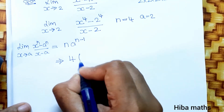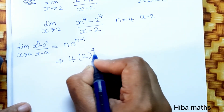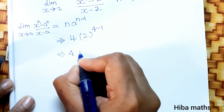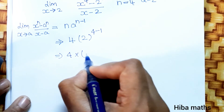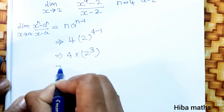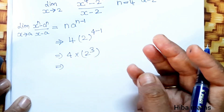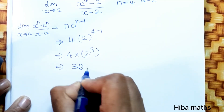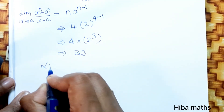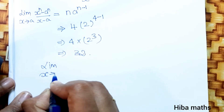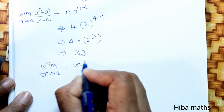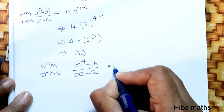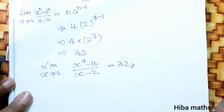Substituting: n is equal to 4, a is equal to 2, so we get 4 into 2 power (4 minus 1), which is 4 into 2 power 3. Now 2 power 3 equals 8, and 4 times 8 equals 32. Therefore, limit x tends to 2, x power 4 minus 16 divided by x minus 2, equals 32.